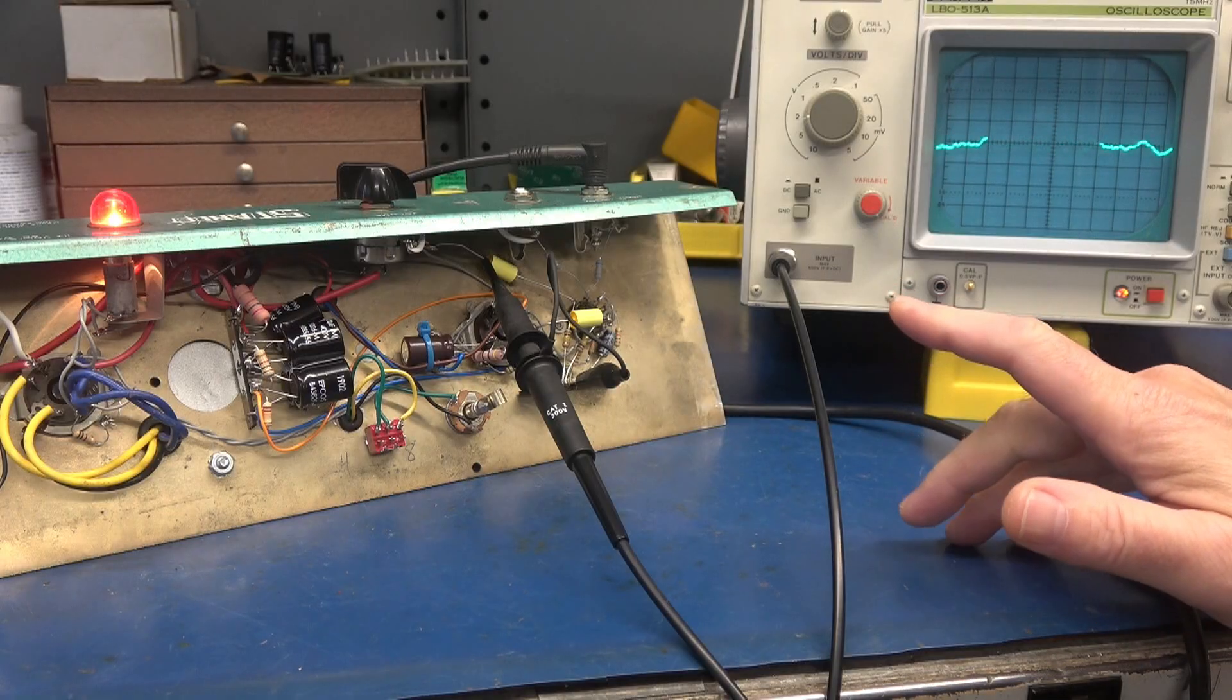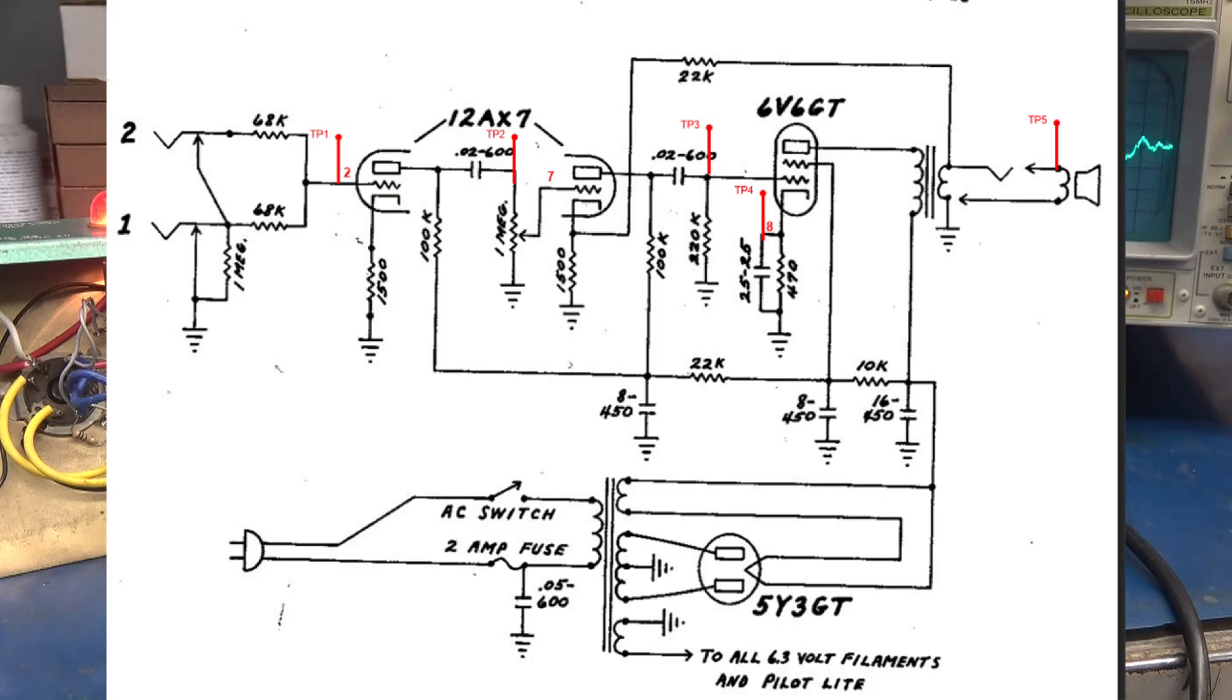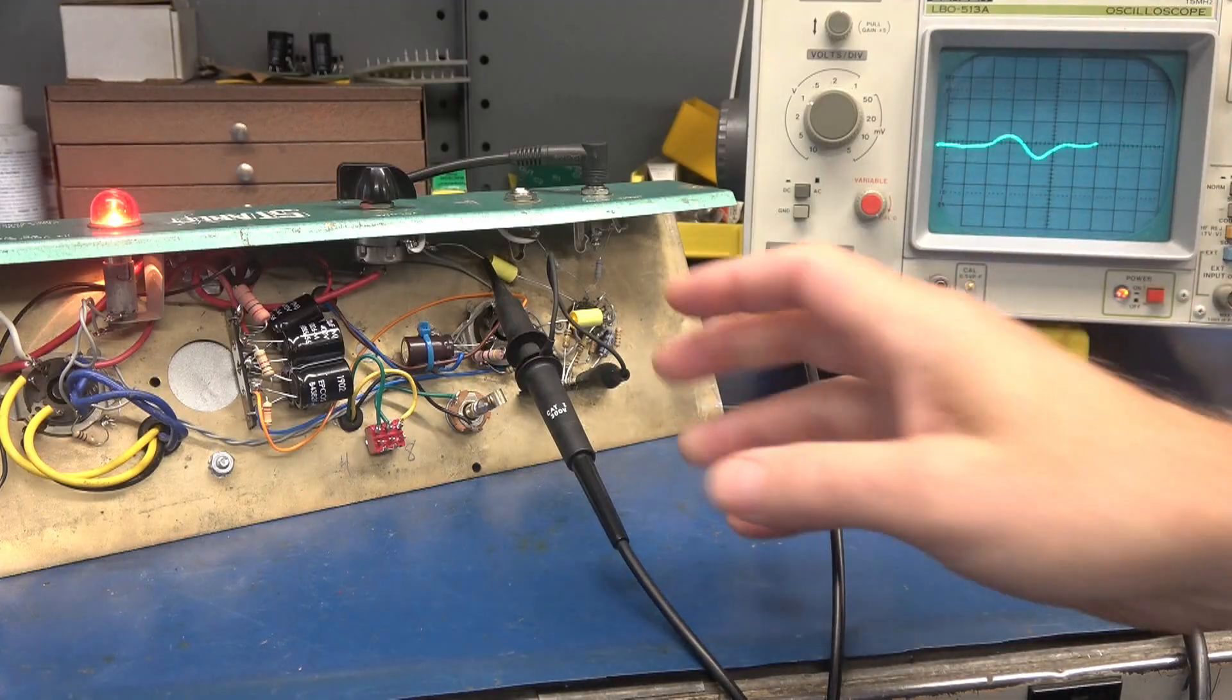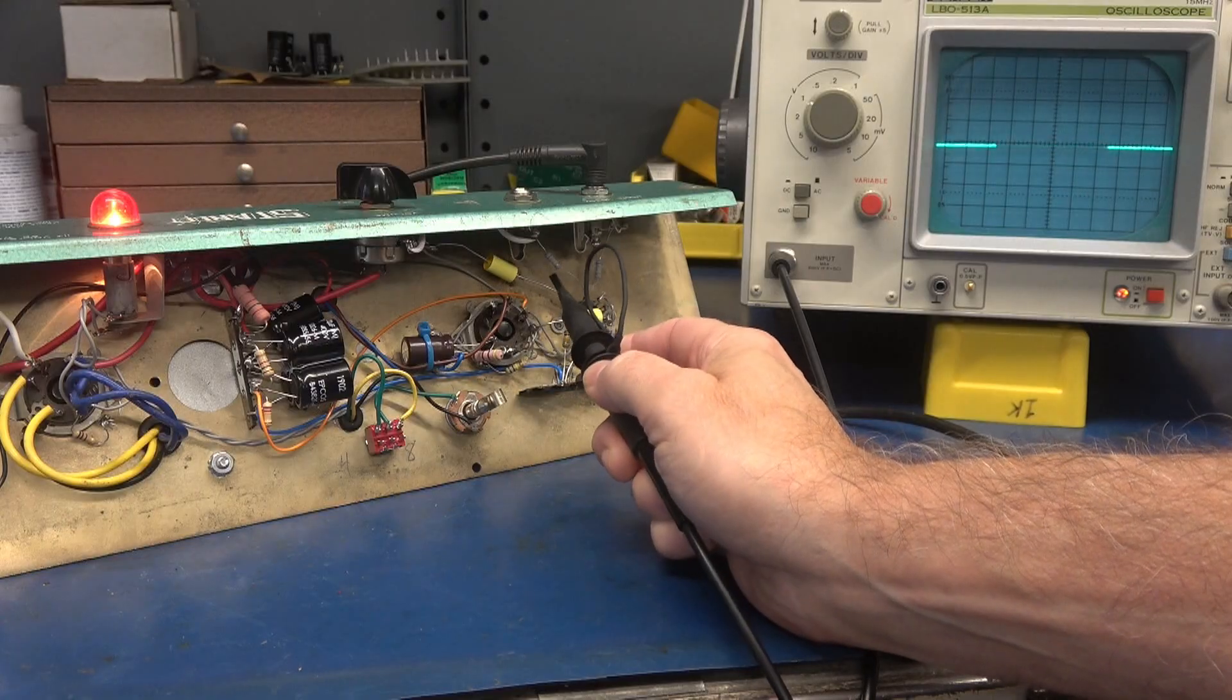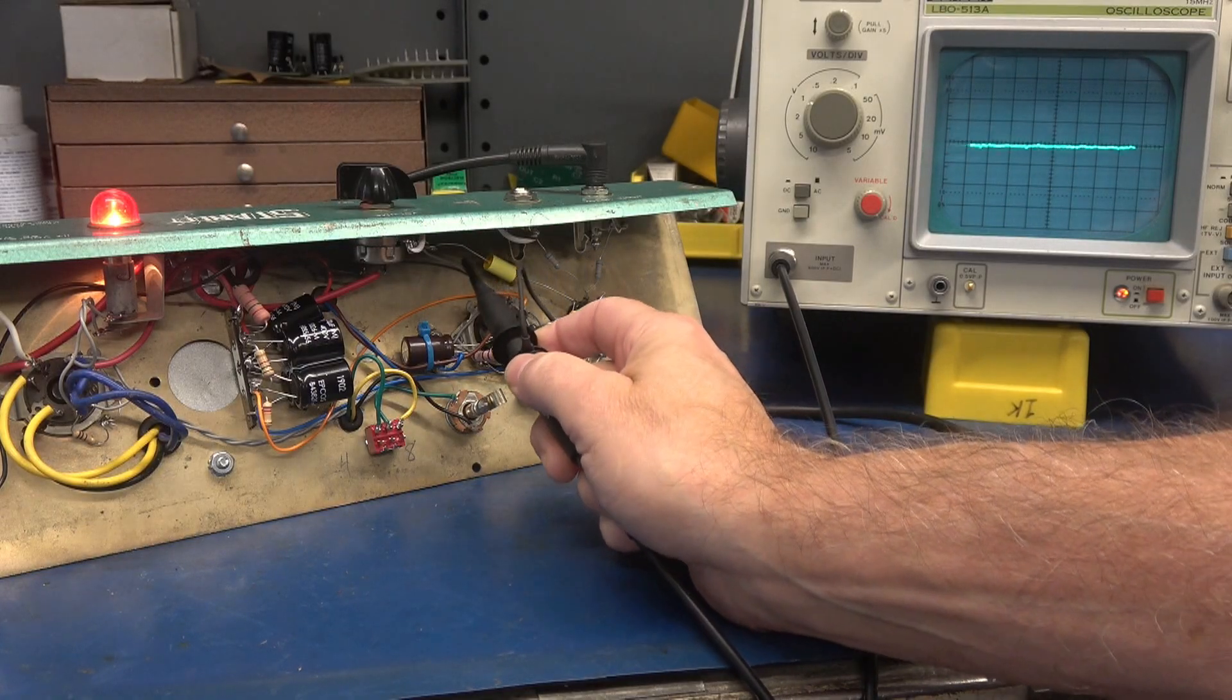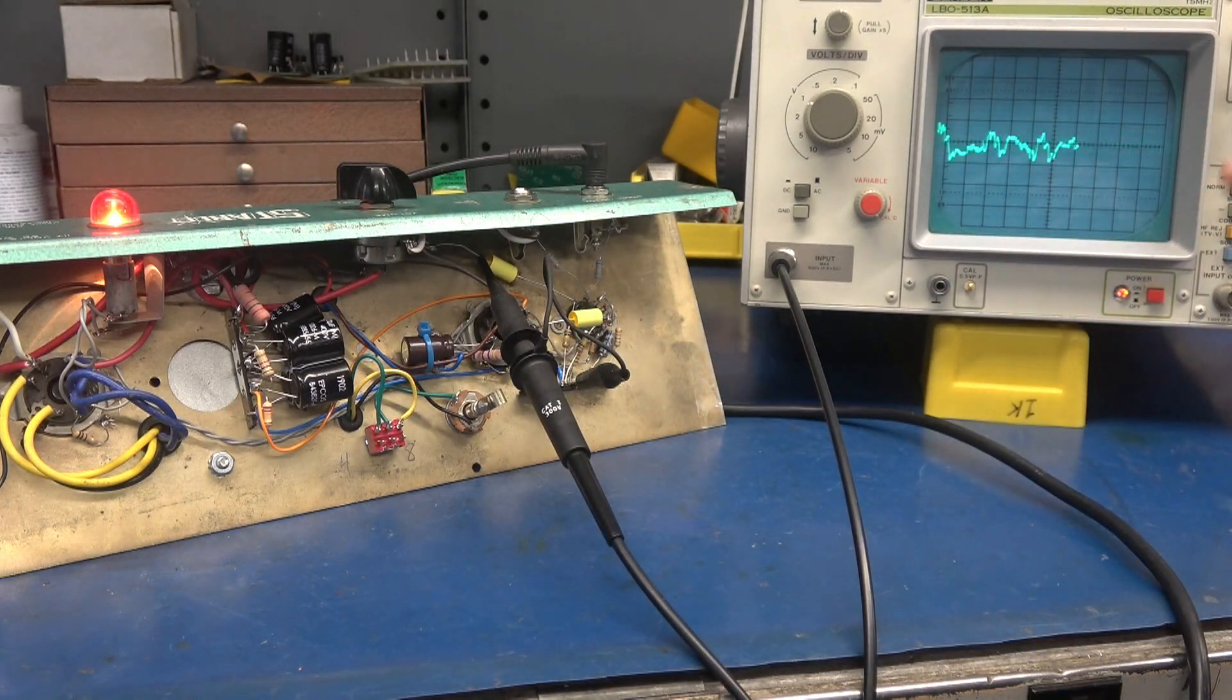So I've moved my scope probe to test point two. And this is still the first triode, but now we're looking at the amplified output. So if we go down a volt, you'll see we got a little bit more amplitude than we did on the input. Now word of caution, you want to connect to the side of the cap that's going to the volume control. You do not want to connect to pin one. There's about 180 volts DC there. Always go to the side of the cap. That is the signal side. All right, let's go to test point three.